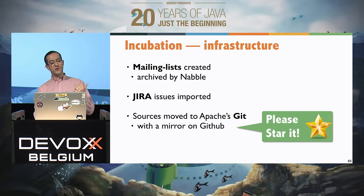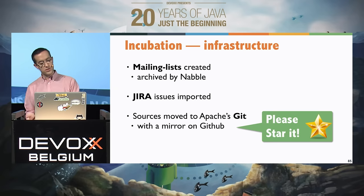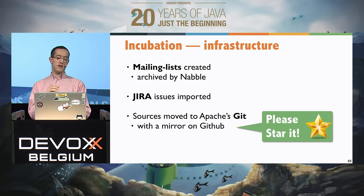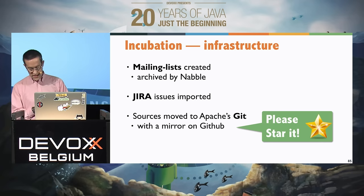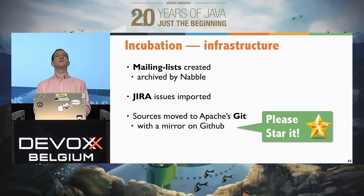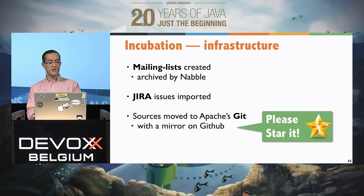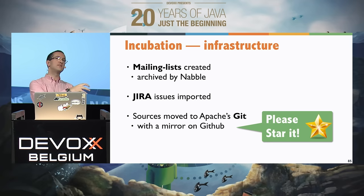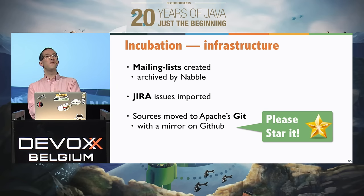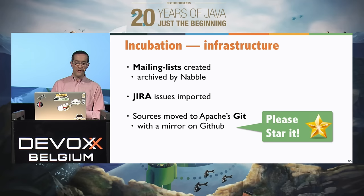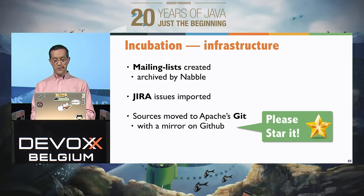We moved the infrastructure — mailing lists, Jira issues, and Git — to the Apache infrastructure. For legal reasons, the main code base must be on Apache's Git repositories, with only a mirror on GitHub. We lost all our GitHub stars when moving to Apache, so if you want, please go to the GitHub mirror and add a star to help us gain them back.